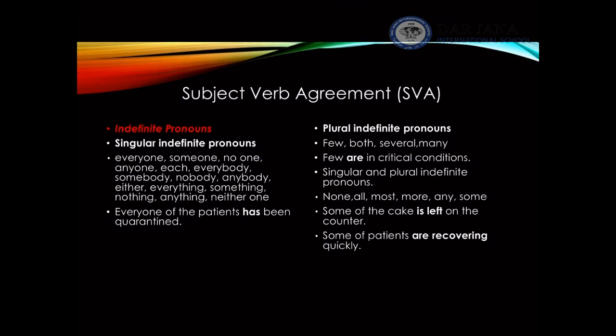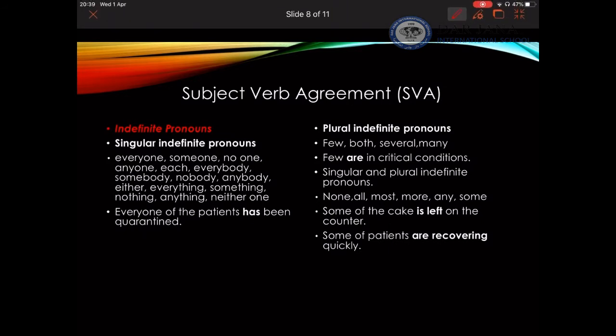Indefinite pronouns are either singular — like everyone, someone, one, anyone, each, everybody, either, or neither — or plural. An example of singular: 'Everyone of the patients has been quarantined' — 'has' is singular, agreeing with 'everyone.' Plural indefinite pronouns include few, both, several, many. Usually, as in the example: 'Few are in critical condition.'